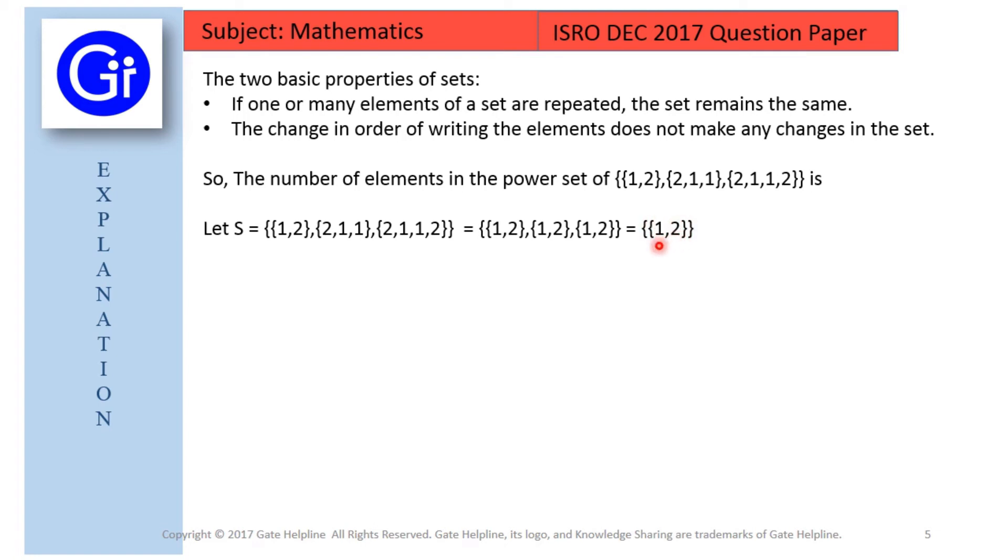So the number of elements in this set is 1. Hence the number of elements in power set of S is 2 raised to power number of elements in the set S that is 1. So 2 raised to power 1 equals to 2. So the number of elements in power set of this set is 2.